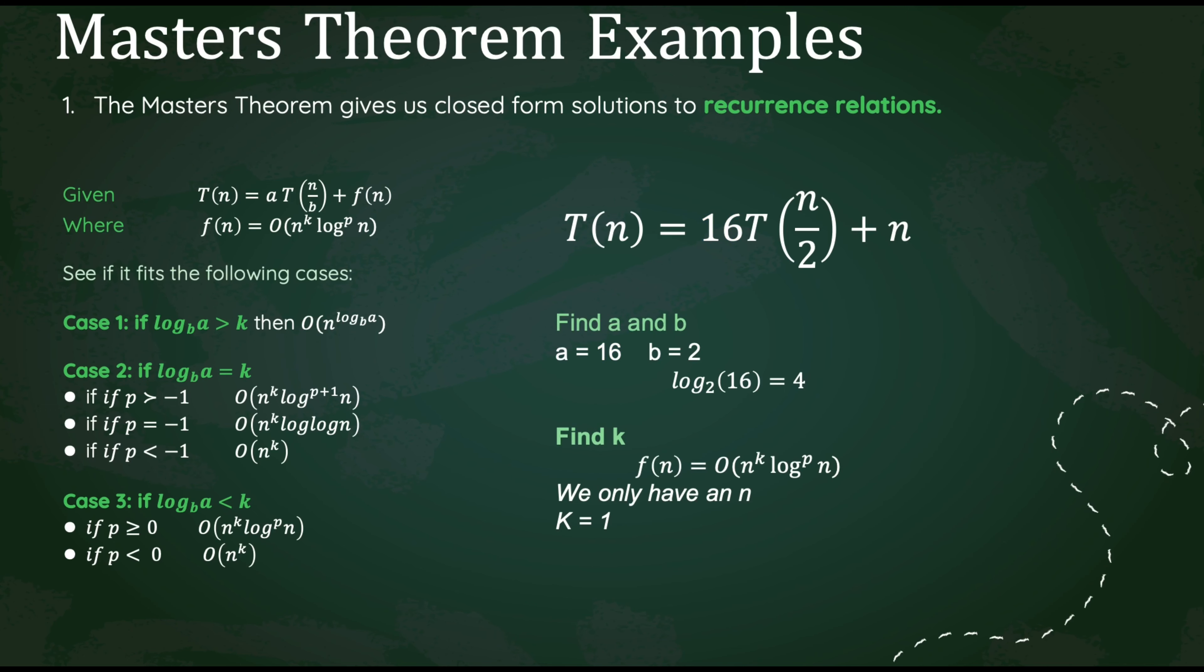We need to now find our k. Let's find our k value. Here we can say again that our n is going to be raised to the first power, making our k equal to 1. Comparing the two, log base b of a is going to be greater than k, meaning we fall in our first case. Since there are no subcases here, we can assume that we do not need to find our p value. That makes our answer for this solution, theta of n raised to the fourth power.